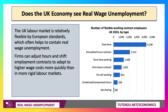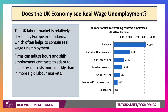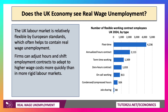Many firms can adjust hours and shift employment and labour contracts to adapt to higher wage costs more quickly than in more rigid, state-imposed, regulatory-driven labour markets. As of 2024, there were over 4.2 million people on flexi-term contracts, 2 million plus on annualised hour contracts, a lot of people doing term-time working, over a million on zero-hours contracts, and so on. So we have millions of people in the labour market in some form of flexible working.